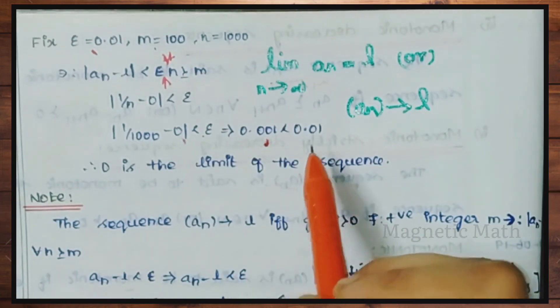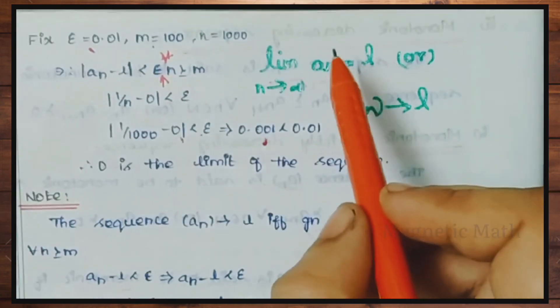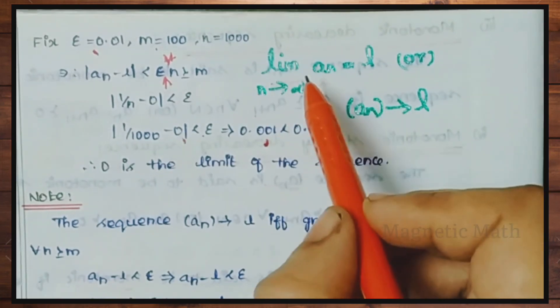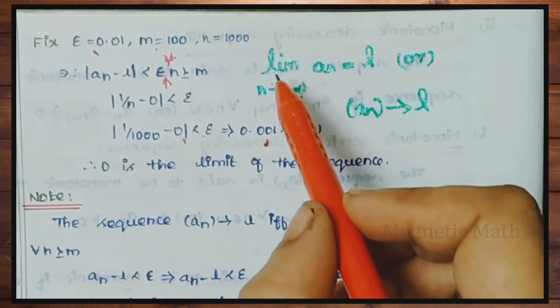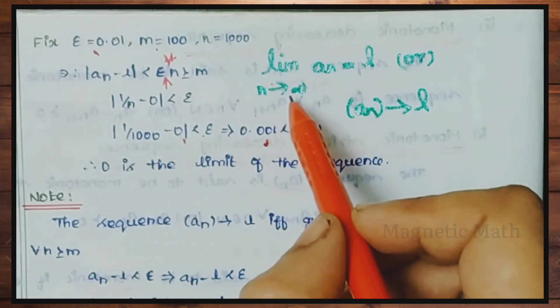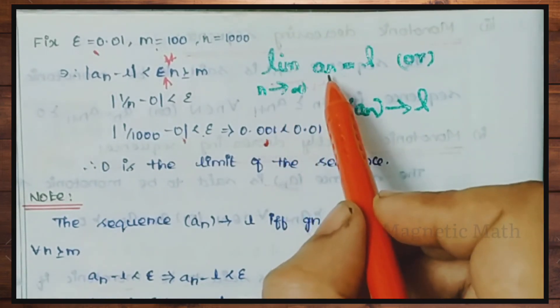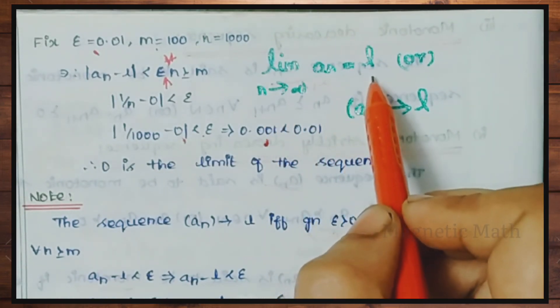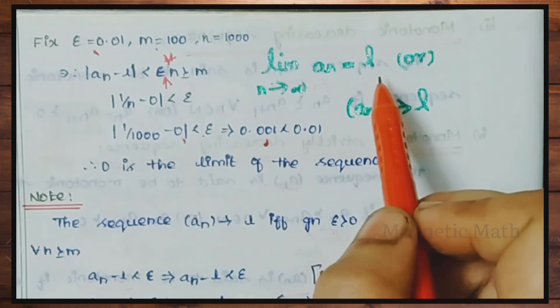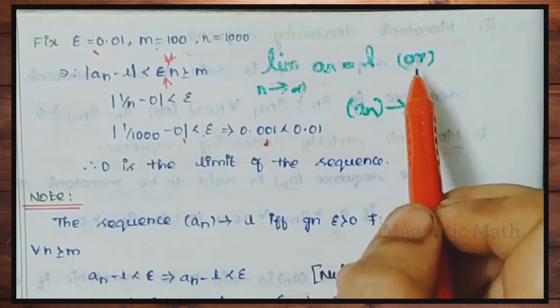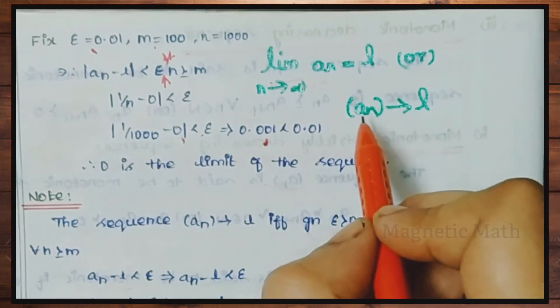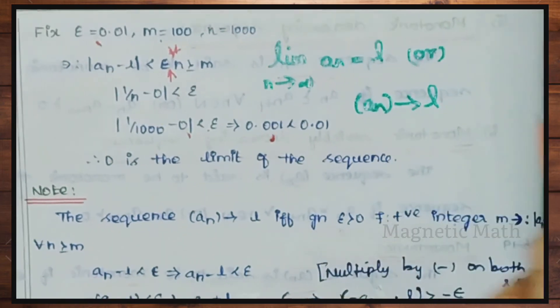One more thing: this is the limit as n tends to infinity. An equals L as n tends to infinity, meaning an tends to L.